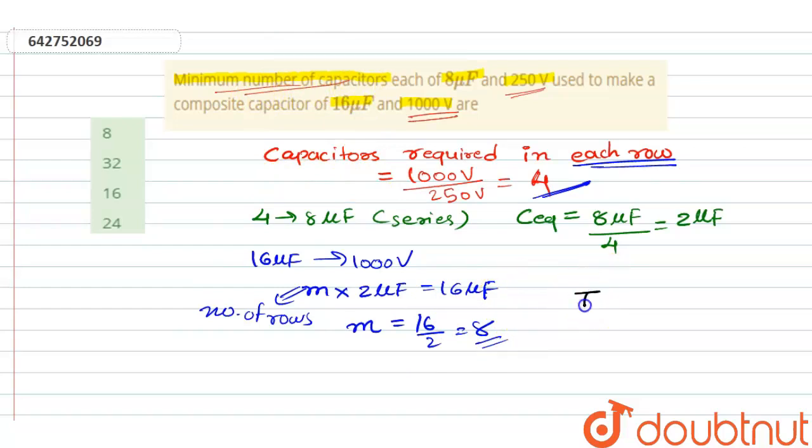So we can say total number or minimum number of capacitors will be equal to 4 into 8, that is 32. That is B. Understood?